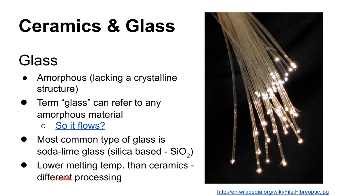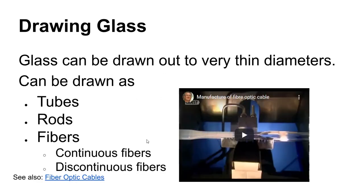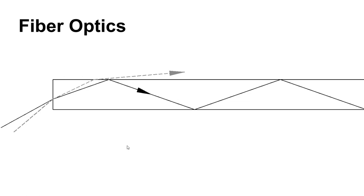Glass processing is quite different from ceramics processing. Primarily, glass is heated and then shaped. One method is drawing — pulling heated glass to form very thin tubes, rods, or fibers. This is the basis for fiber optic cable manufacturing, which is worth understanding even if not covered elsewhere in the curriculum.